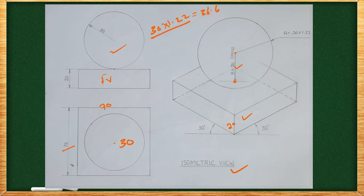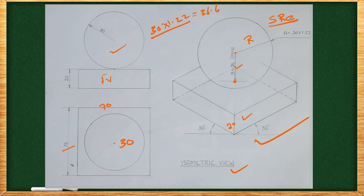The key value is 36.6 mm — the isometric radius for the sphere. We draw the rhombus and complete the isometric circle representing the sphere using this radius. The isometric view is now complete. Thank you.